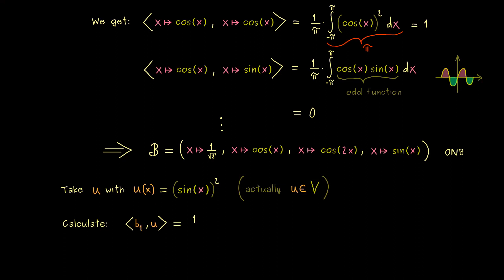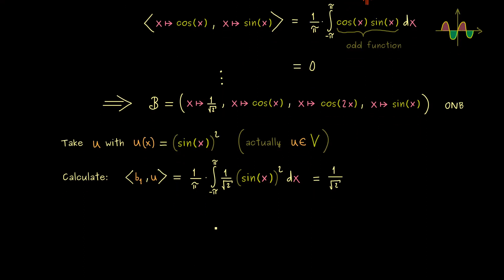The first basis element b1 is the constant function. Hence we have this constant and sine squared inside the integral. And there the calculation works exactly like for the cosine squared from before. So what we get out is π times the constant. And π cancels out again, so only the constant remains. Okay, there we have it. This is the first Fourier coefficient.